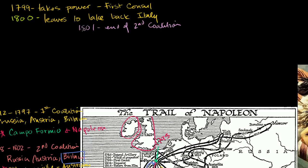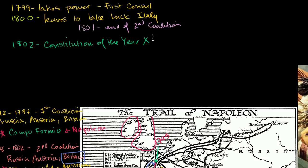Then in 1802, Napoleon gets the Constitution of the Year 10 passed — Year 10 because they had this whole revolutionary calendar going, so this was the 10th year of the Revolution. What's really relevant is Article I, which says the French people name, and the Senate proclaims, Napoleon Bonaparte First Consul for life. This legally gave Napoleon almost king-like status, writing in words that he will rule France for the rest of his life.